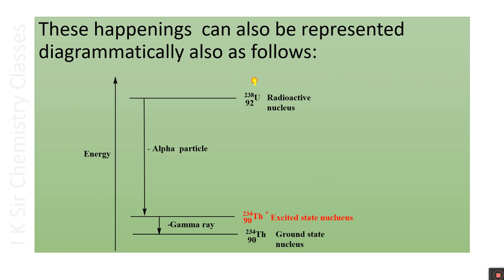These happenings can be represented diagrammatically as follows. This is Uranium-238 nucleus — it is radioactive. It emits an alpha particle forming the nucleus of thorium-234, which is in the excited state. It has energy greater than the ground state. It emits the excess energy in the form of a gamma ray, forming the thorium-234 nucleus with minimum energy — the ground state nucleus.